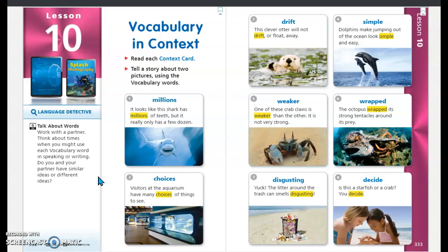Number two is choices. Visitors at the aquarium have many choices of things to see. Number three is drift. This clever otter will not drift or float away.